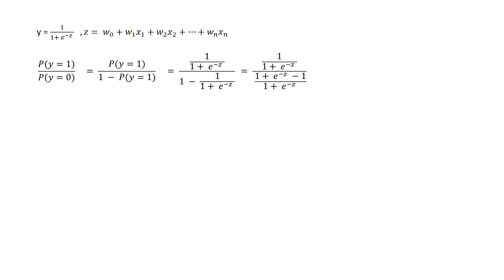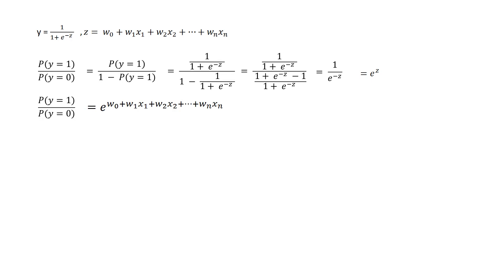Let's apply the logistic regression equation to the odds probability ratio. We make the denominator the same in the bottom term. Since the top and bottom terms now share the same denominator, we can simplify them. The result becomes 1 over e to the power of minus z, which we can rewrite as e to the power of z. So the ratio of being positive to being negative is e to the power of z, where z is the bias term plus features times their w coefficients.